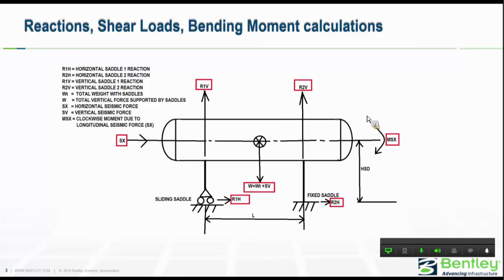This is how the forces and moments look in a horizontal vessel on two saddles. It is supported by saddle one and saddle two. One saddle is typically fixed and the other is a sliding support which may or may not have friction. I will consider both cases and show what differences and additional forces appear when you include friction. R1H is the horizontal saddle one reaction, R2H is the horizontal saddle two reaction, R1V and R2V are the vertical saddle reactions, and WT is the weight of the equipment.